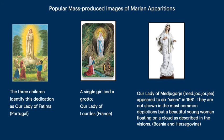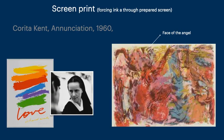Many popular mass-produced images depict Marian apparitions. How do you identify them? Well, if there are three children it's Our Lady of Fatima; a single girl in a grotto — Our Lady of Lourdes; and finally Our Lady of Medjugorje, who appeared to six seers in 1981. Those young people are not shown in common illustrations — only their description of who they saw, which was a beautiful young woman floating on a cloud. You may be familiar with the work of Corita Kent, a pop artist. Her poster is very familiar, but she also did a screen print of the Annunciation — a little hard to decipher, so I have an arrow pointing out where the face of the angel is, and of course the blue represents the Virgin Mary.